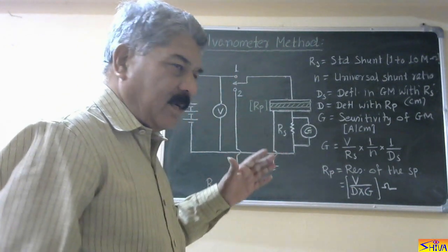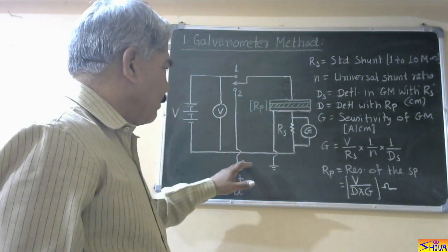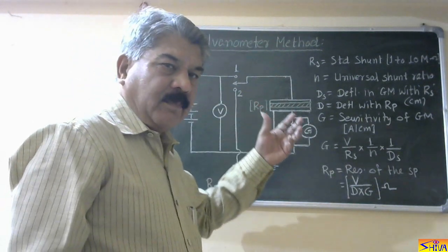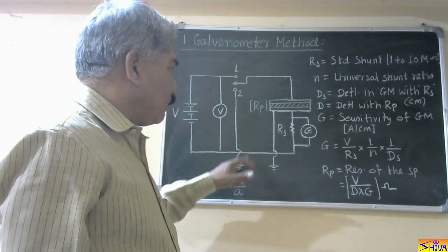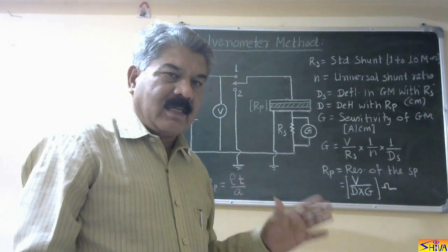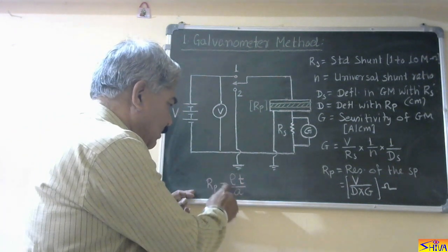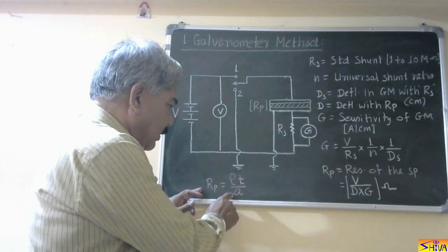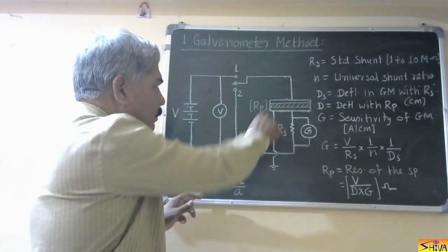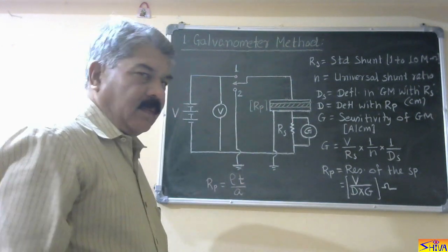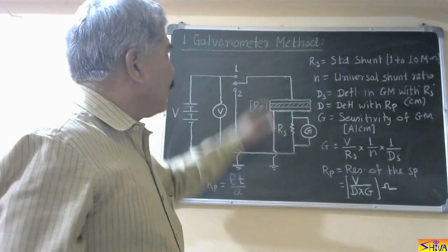After the test is complete, we connect to ground so that any residual charges are discharged. As a precautionary safety measure, we discharge the test sample so that residual charge does not harm operating personnel. If we want to find volume resistivity rho, then Rp equals rho times t upon A, where t is the thickness of the sample and A is the area. In this way, we determine the insulation resistance or DC resistivity by the galvanometer method.